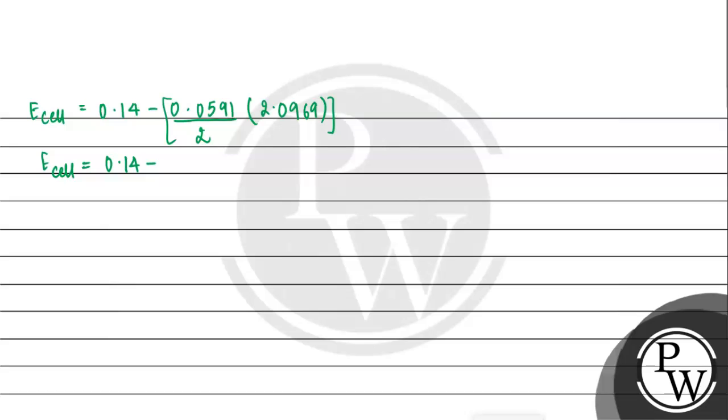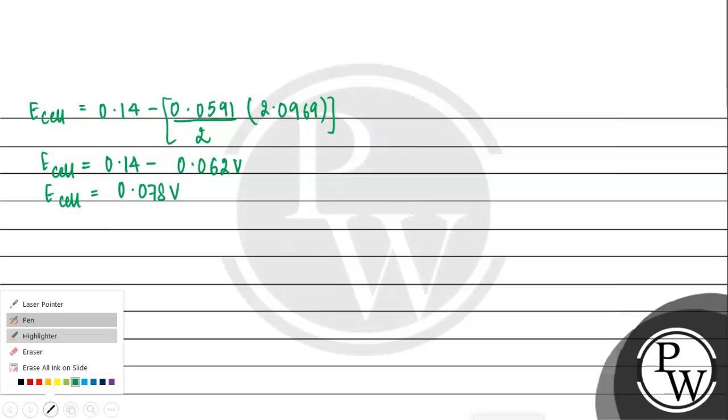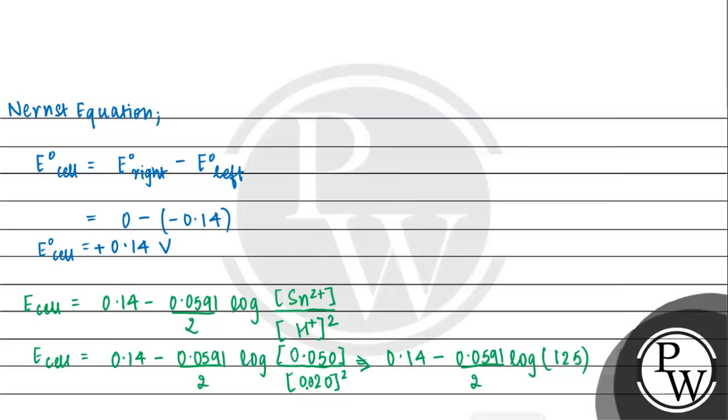After calculating, E_cell = 0.078 volts. So the EMF of the cell is 0.078 volts, and we have written the Nernst equation of the cell. I hope you understood the question well. Best of luck.